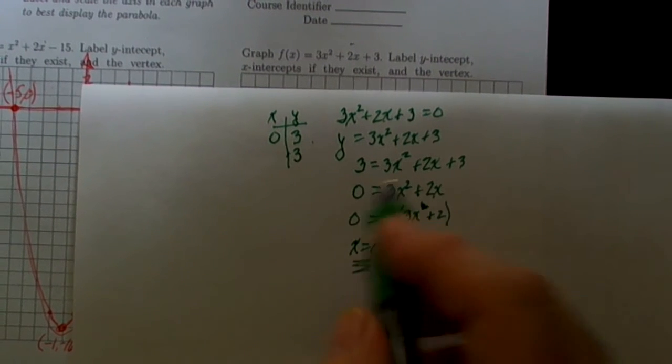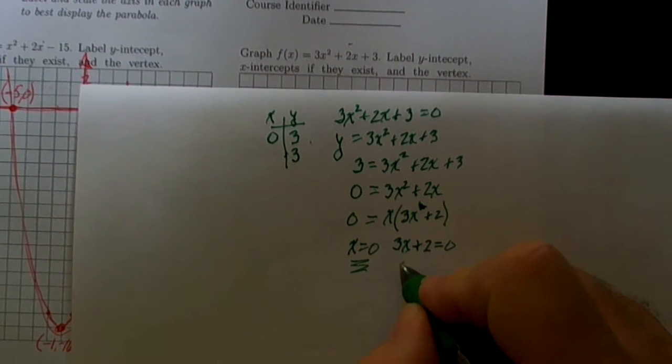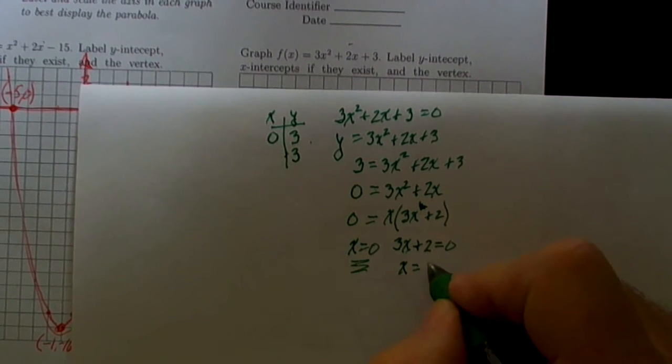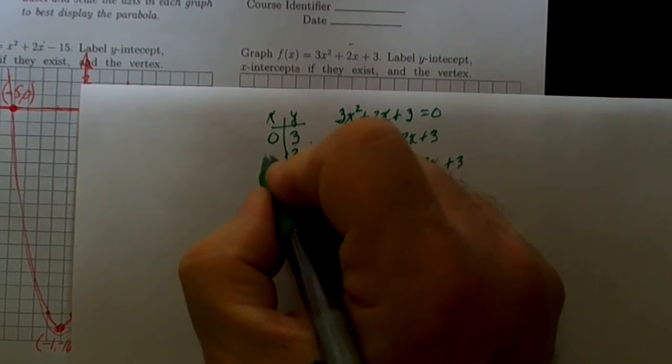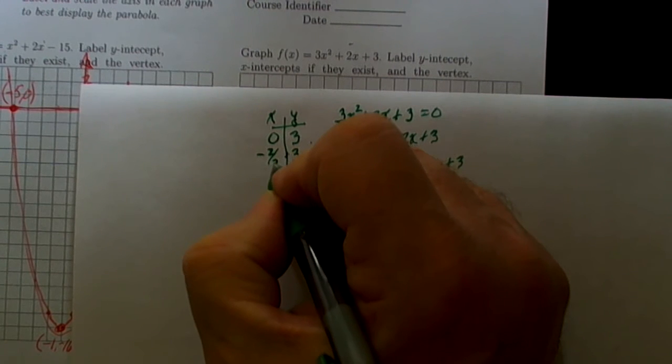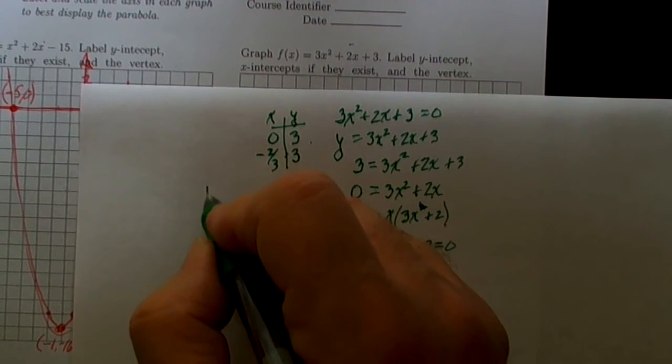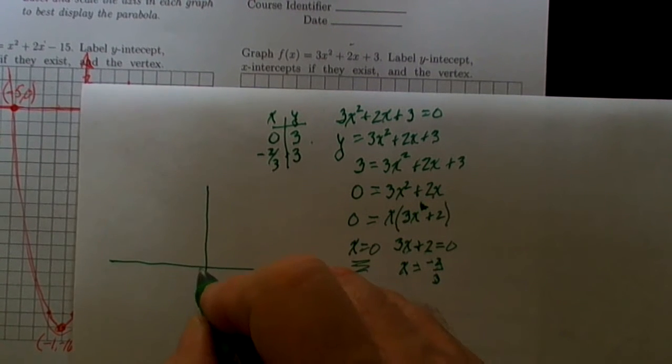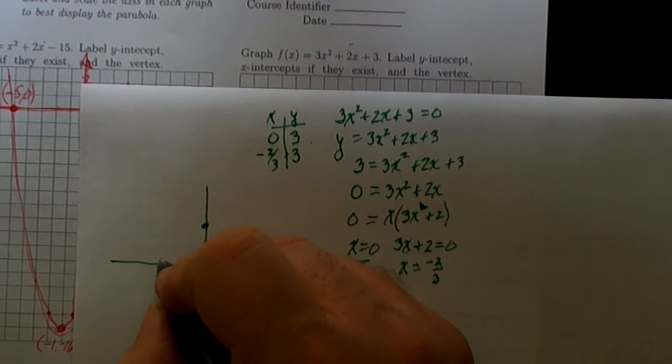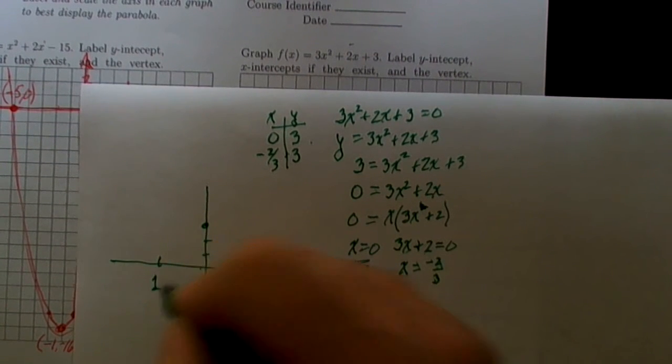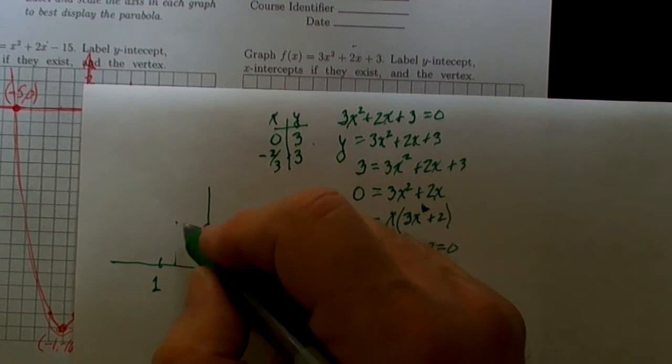We already knew this one, that was what this point was all about. If x is 0, y is 3. If x is negative 2/3 then y is 3. So let's look at that much of the graph. When we're at 0 we're up at 1, 2, 3. When we're over here at minus 2/3 we're again up at this same height.